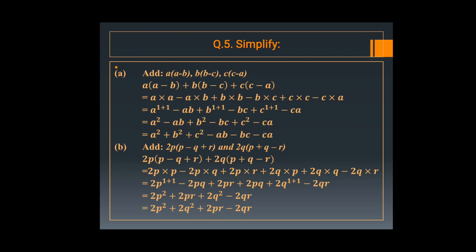Now in question number 5, simplify. In part a: a into a minus b, then add b into b minus c, then add c into c minus a. Multiply a by a and a by b; in the second part, b by b and b by c; in the third, c by c and c by a. All are unlike terms. So the answer is a square plus b square plus c square minus ab minus bc minus ca.